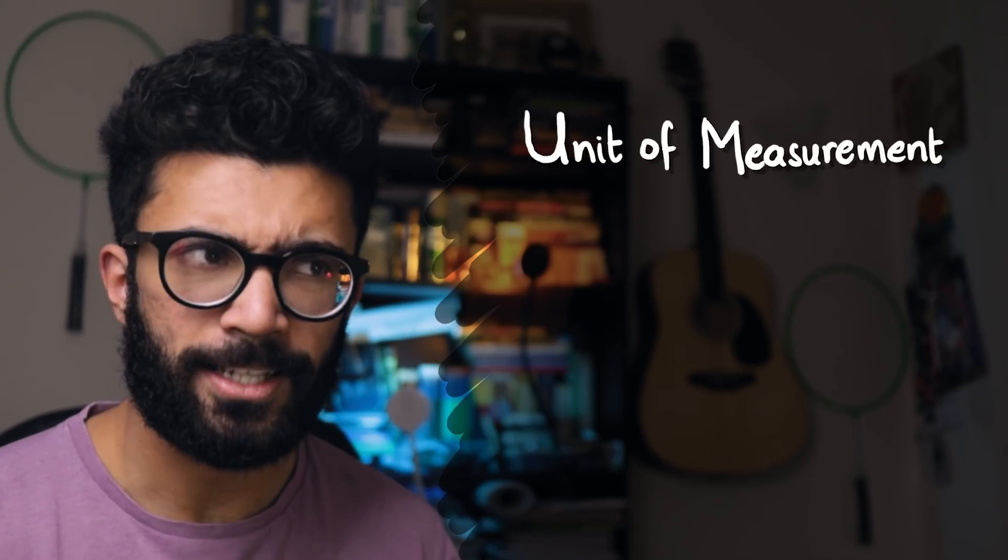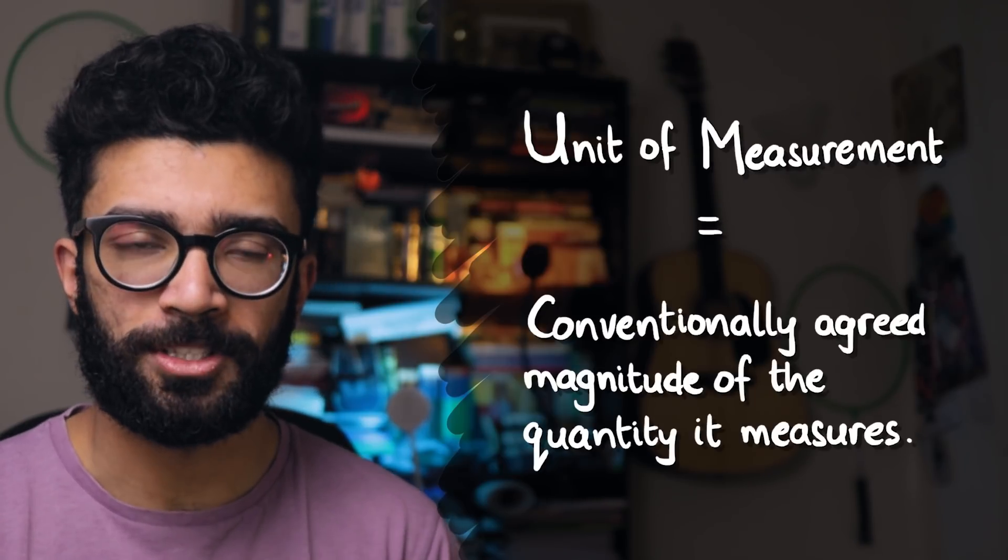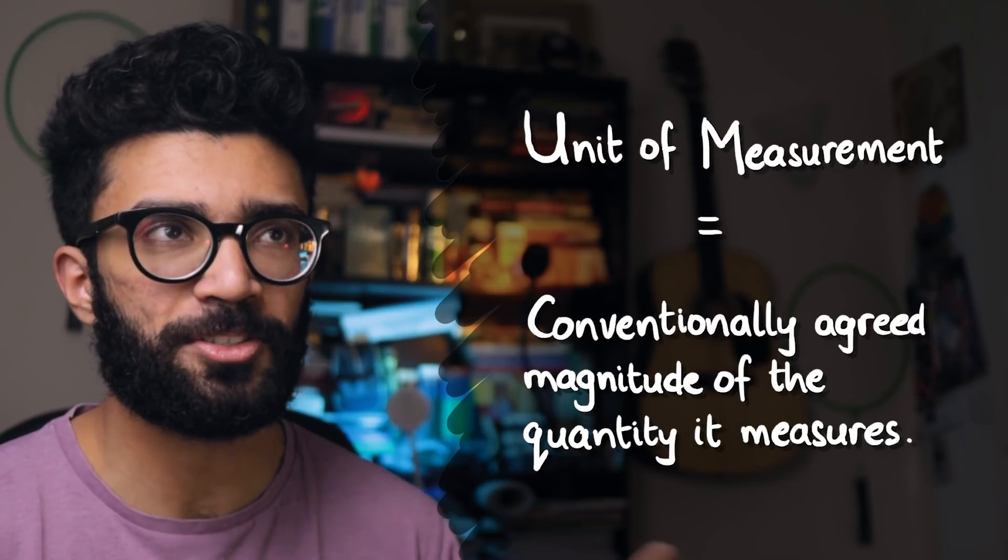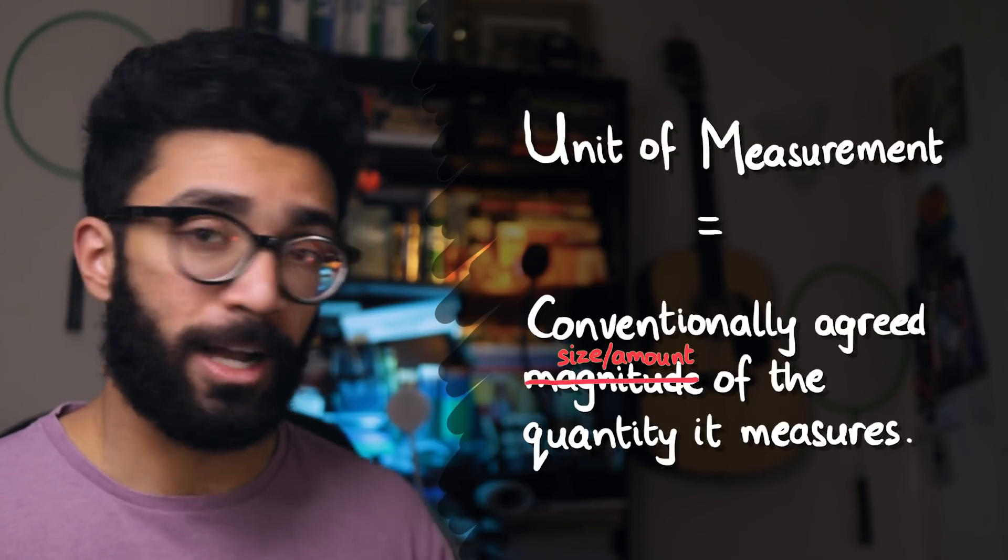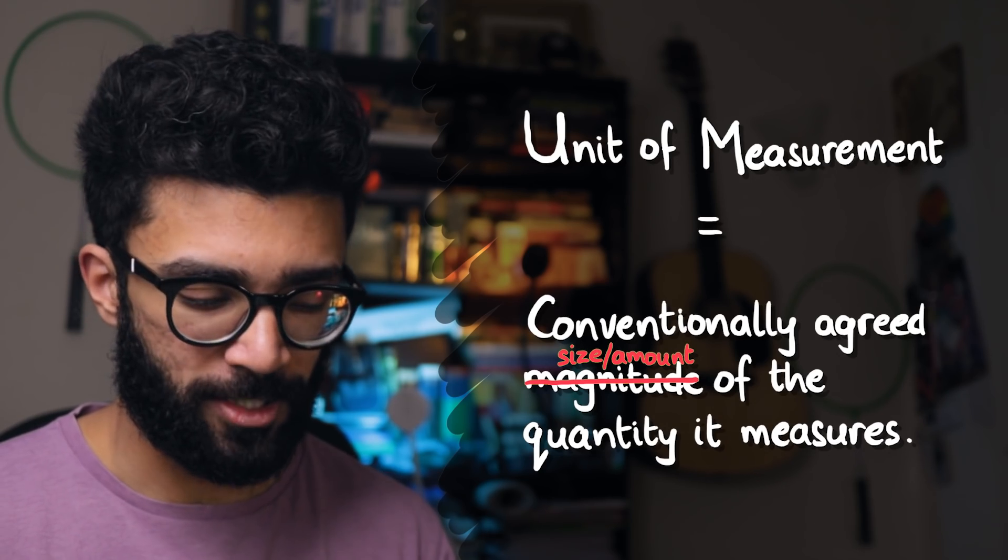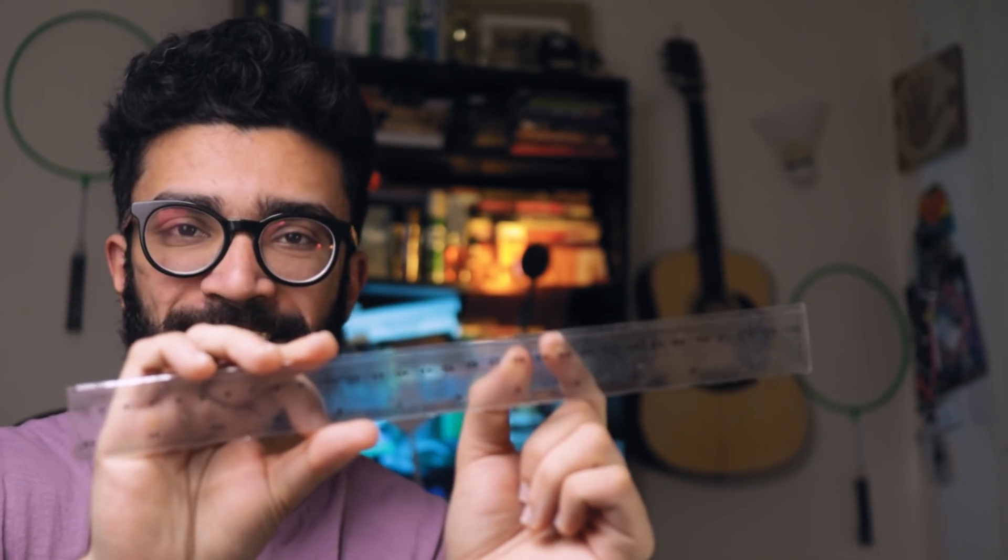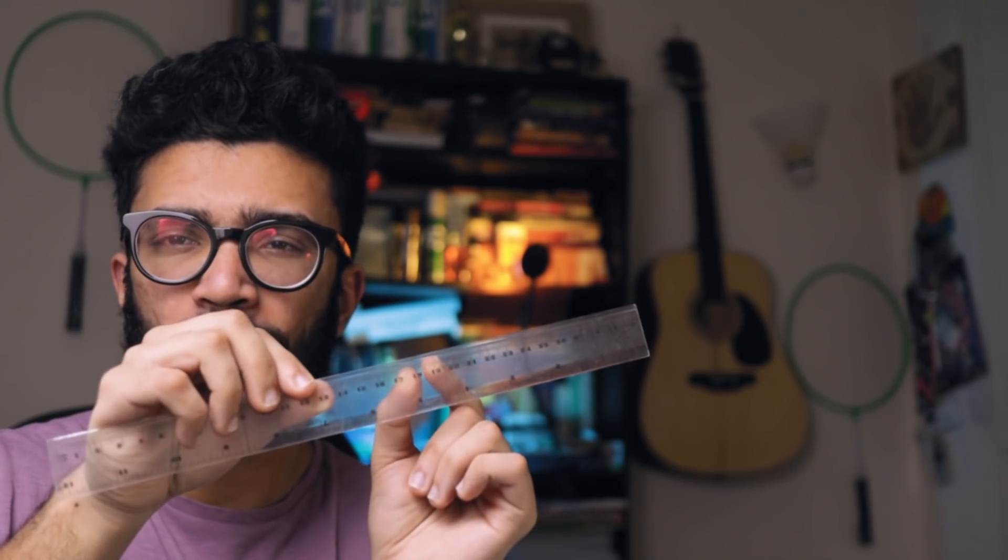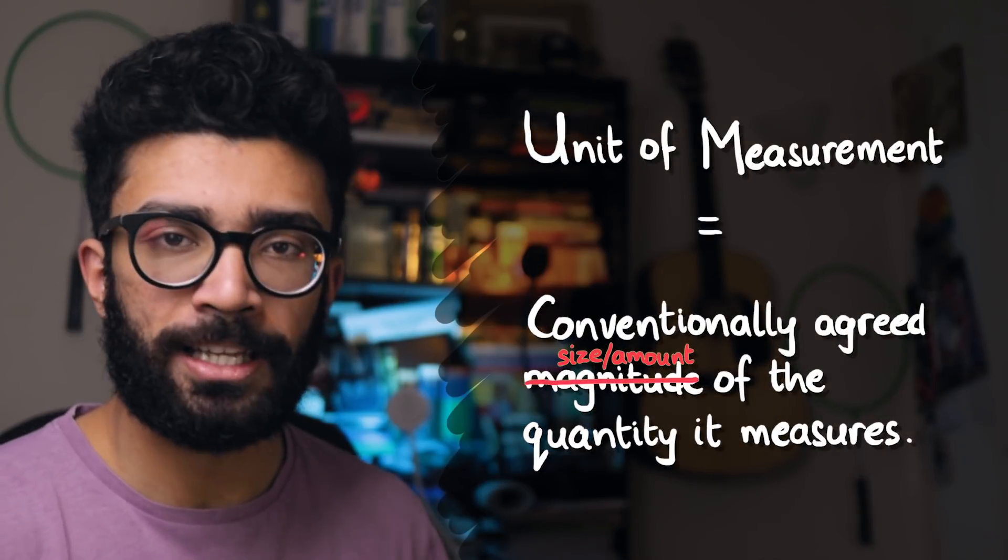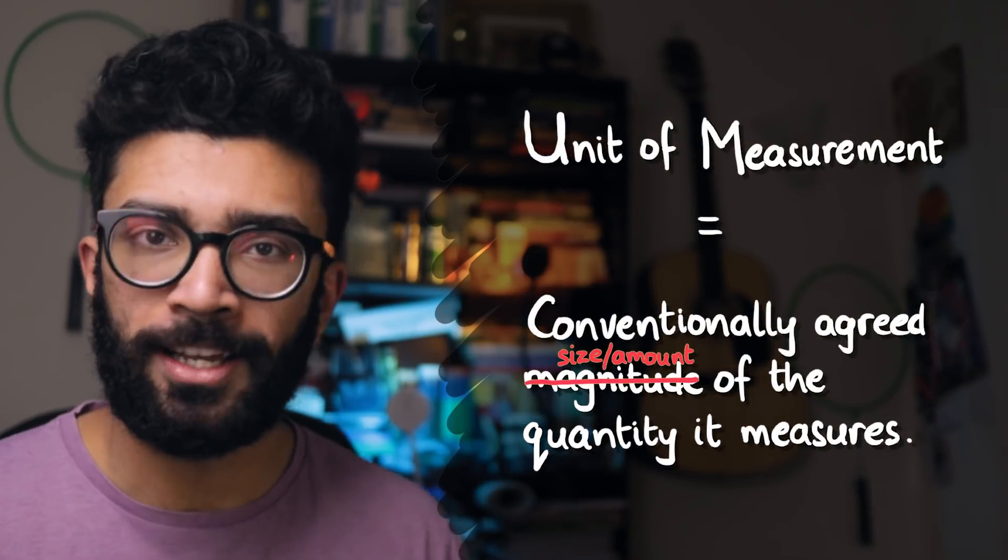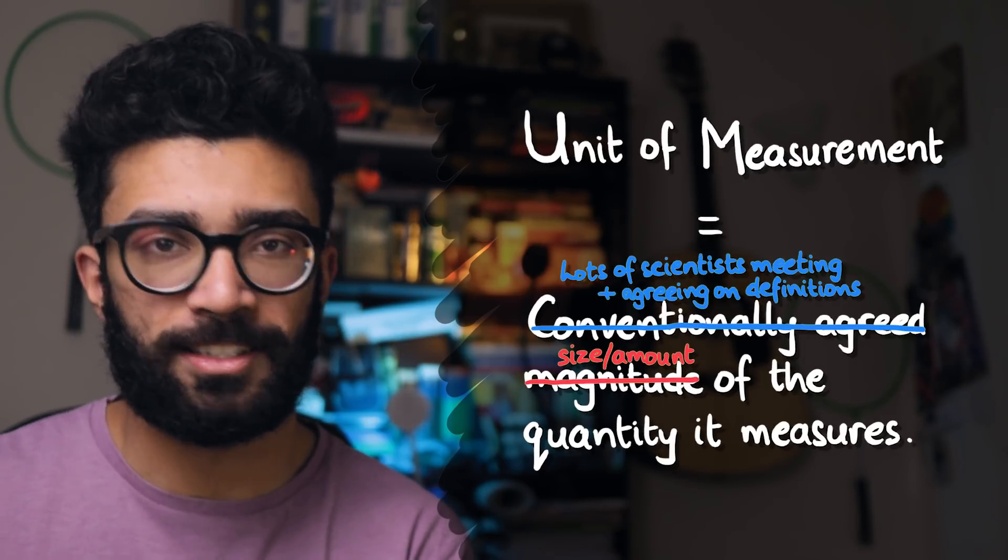Now a unit, technically a unit of measurement, is a conventionally agreed magnitude of the quantity it measures. Now this sounds like a complicated definition, so let's break that down. A unit is a fixed amount of a particular quantity. For example, a centimeter is this particular distance here. This distance, or nearly enough exactly that distance, is defined as a centimeter, and that definition is chosen by convention, by lots of scientists gathering together and agreeing that that's what a centimeter is defined as.